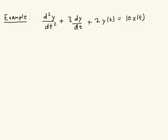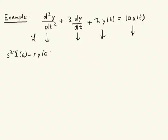If we're going to use the Laplace transform, what we do first is transform the differential equation. We take the Laplace transform of each of these terms, which is straightforward to do if you understand the differentiation property. The transform of the first term d²y/dt² comes out to be s²Y(s) minus s·y(0⁻) minus y'(0⁻), that's the derivative of y at 0⁻.